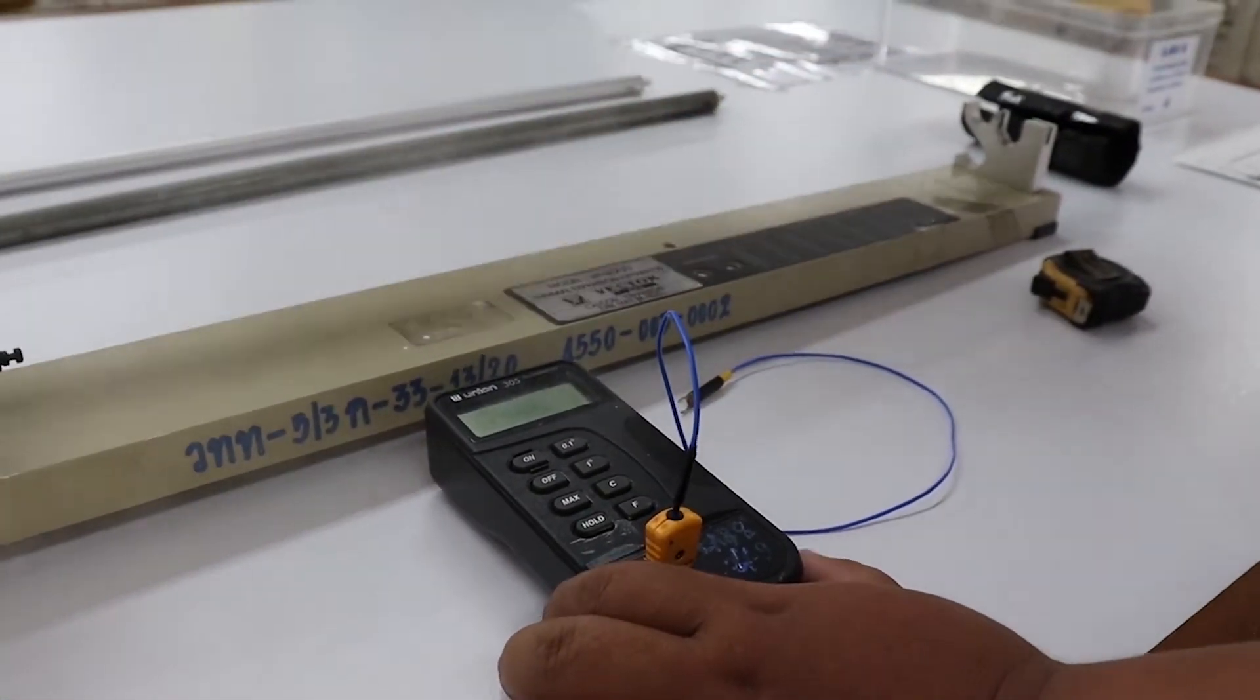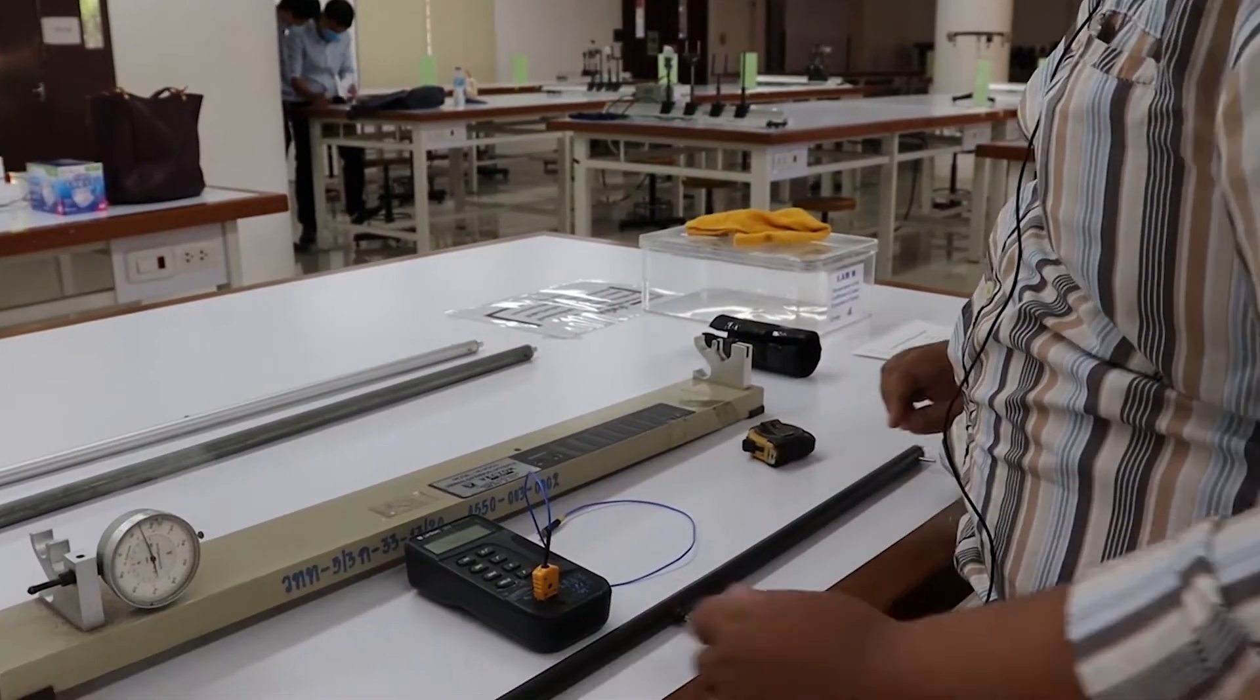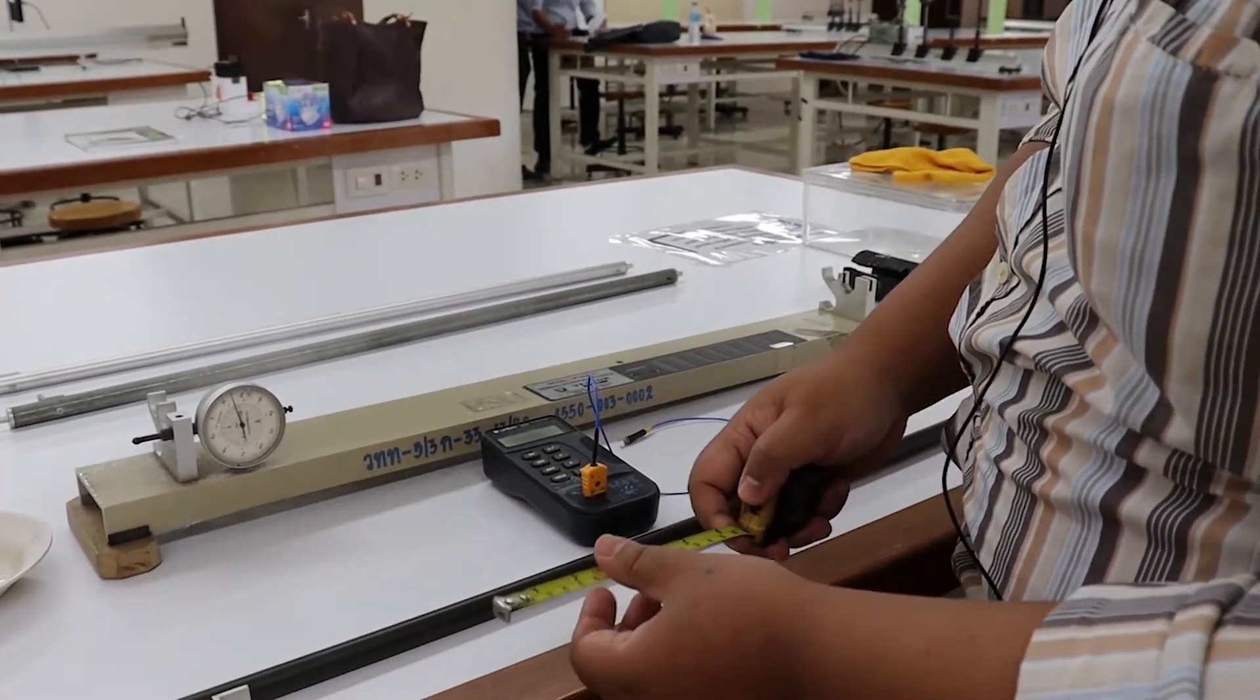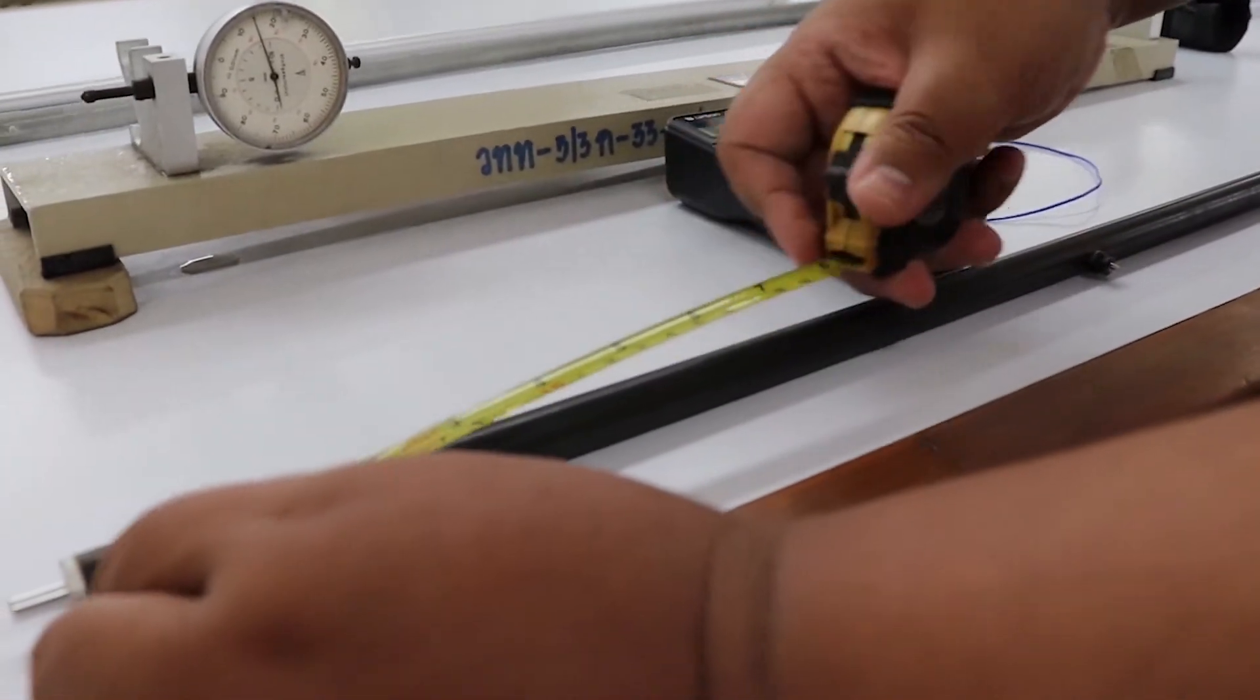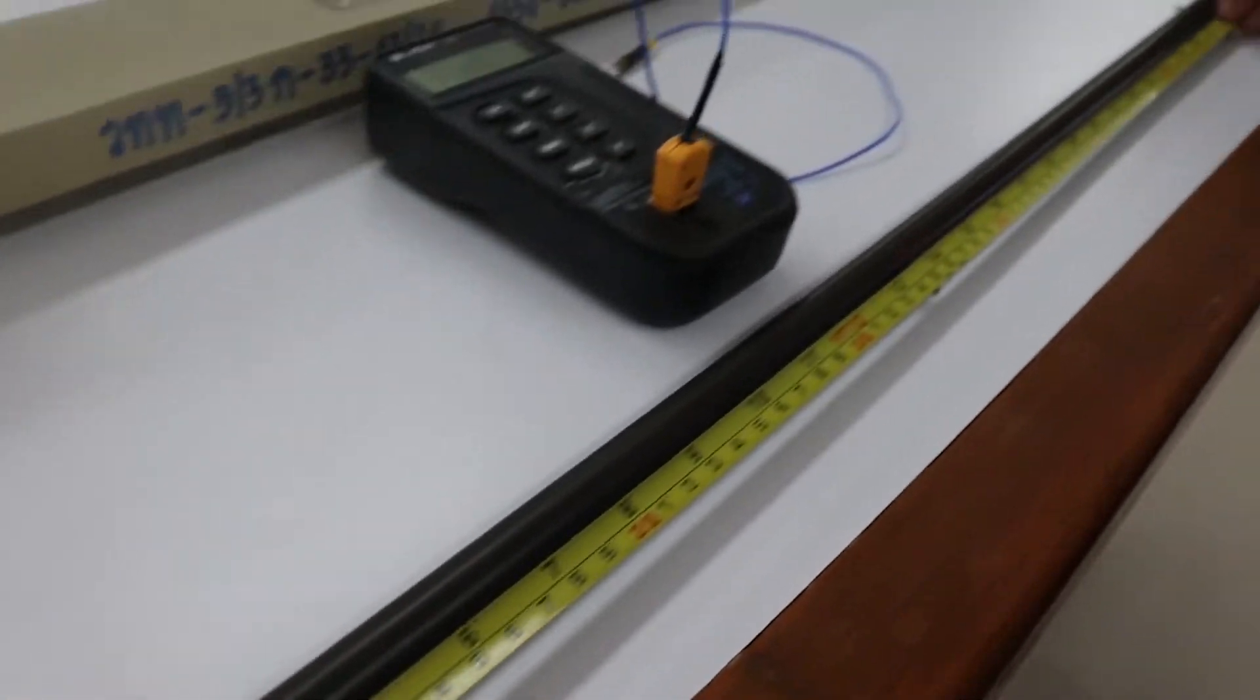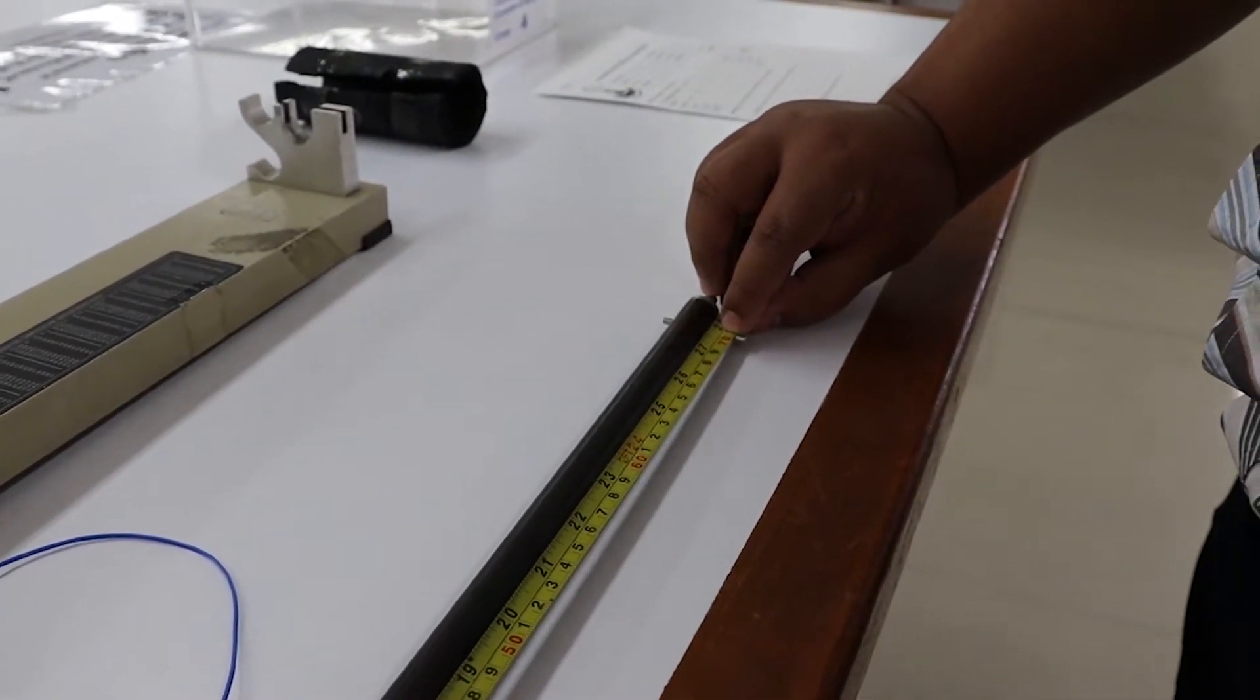The first step: you have to measure the initial length L0 of the metal rod by using a tape measure. Measure from the right angle plate here to the metal stick here. This is L0.